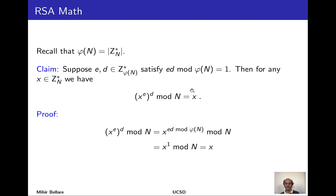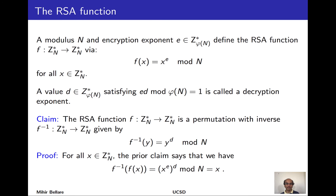The claim is that (x^e)^d mod N equals x itself. Intuitively, raising to e is encryption and raising to d is decryption, but we're just looking at the math. The proof: this becomes x^{ed}; since exponents in ZN* can be taken modulo the order φ(N), we get x^{ed mod φ(N)}; and since ed ≡ 1 mod φ(N), that equals x^1 = x.